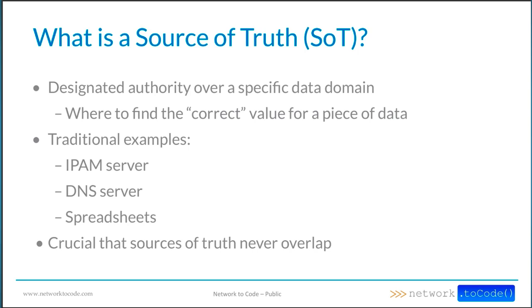Sources of truth can be broken out by function or by domain. For example, you might have regional sources of truth. There's no one best way to break these up — it's going to depend very much on your current and future toolset, organizational politics, and just whatever makes sense for you. But the most important key to remember is that by definition, you can never have overlapping sources of truth. There can only ever be one authoritative source for any domain of data.